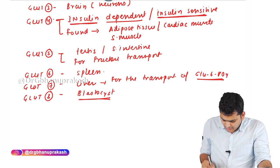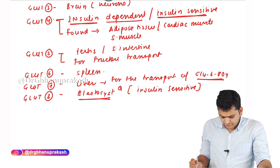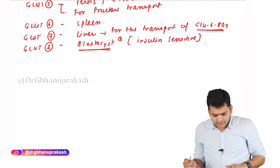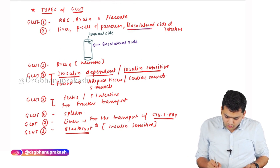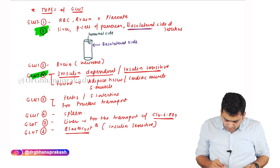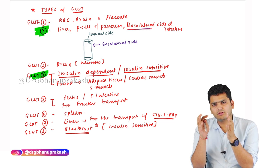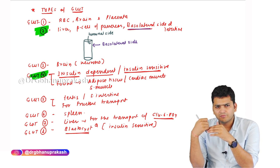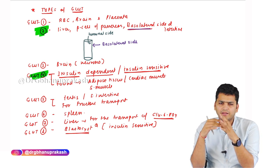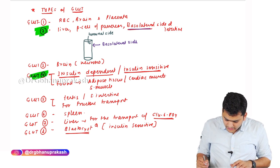GLUT 8 is found in the blastocyst and is also insulin dependent or insulin sensitive. Among all these, the most important ones are GLUT 2 — found in liver, beta cells of the pancreas, and basolateral side of the intestine — and GLUT 4 — found in adipose tissue, cardiac muscle, and skeletal muscle, and insulin sensitive.